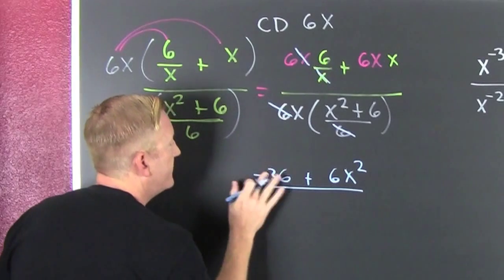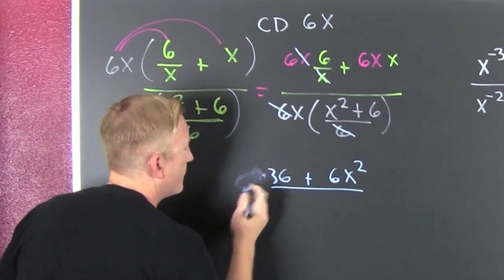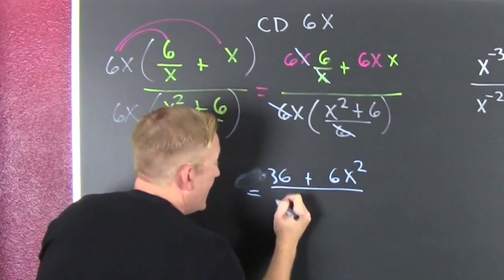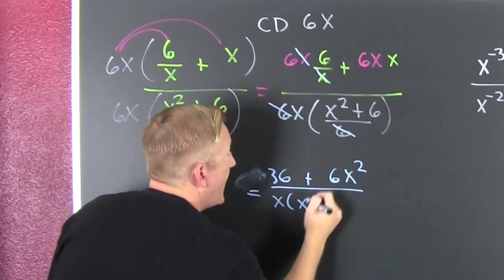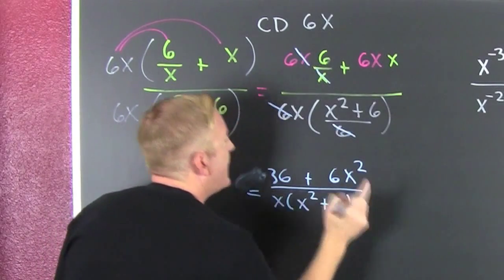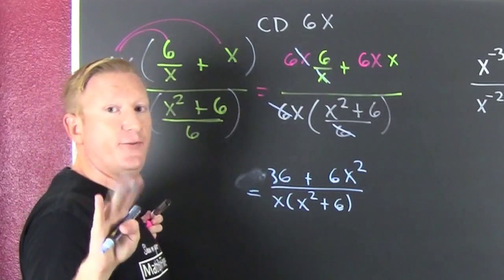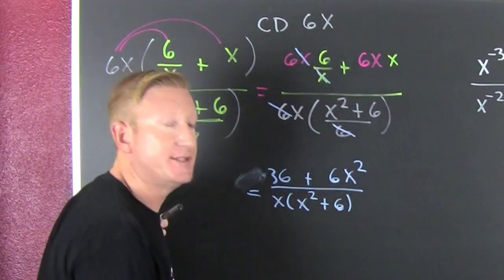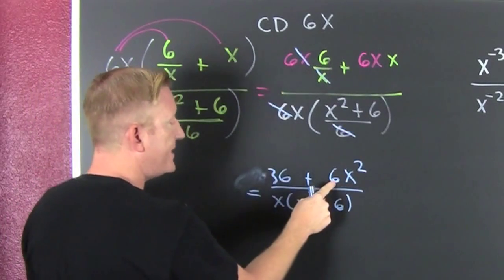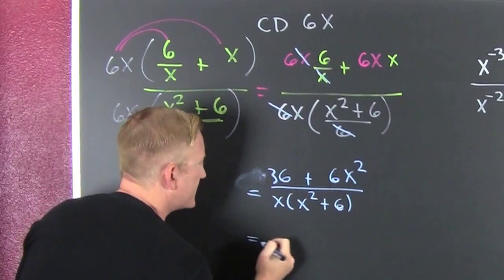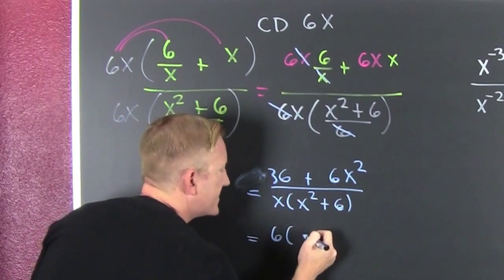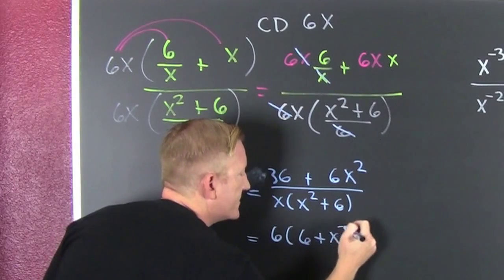And then I have an x times an x squared plus 6. Now wait. Let's see if we can factor and reduce this further. In the top I see I have a common factor of 6. So then I pull out a 6.